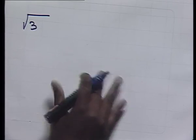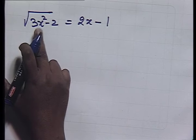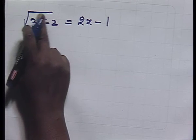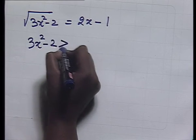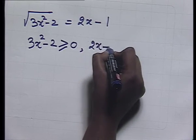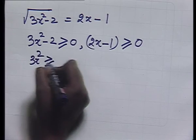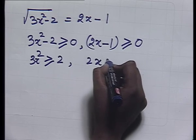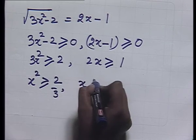This can be factorized as (x - 4)(x - 1) = 0, giving roots x = 4 and x = 1. Thus, equations of the form ax + b/x = c, x ≠ 0, can be solved by multiplying both sides by x to get a quadratic equation. Consider √(3x² - 2) = 2x - 1. This equation will have roots if 3x² - 2 ≥ 0 and 2x - 1 ≥ 0, i.e., x² ≥ 2/3 and x ≥ 1/2.